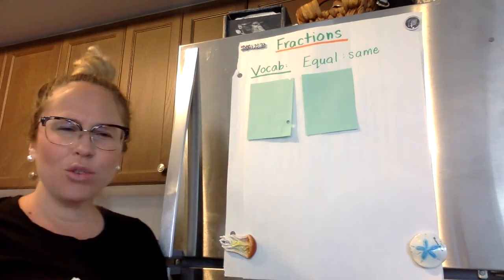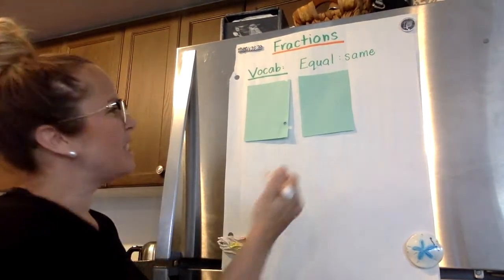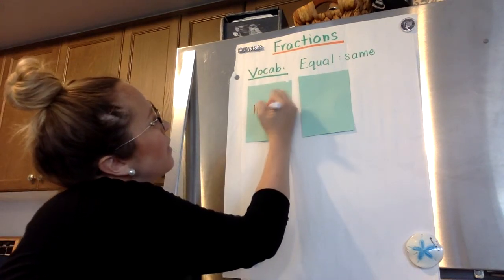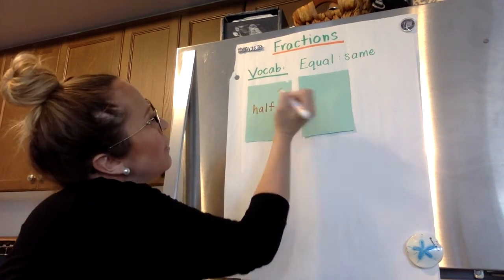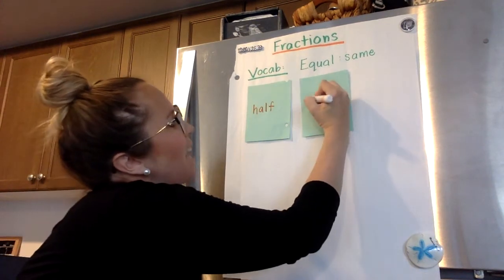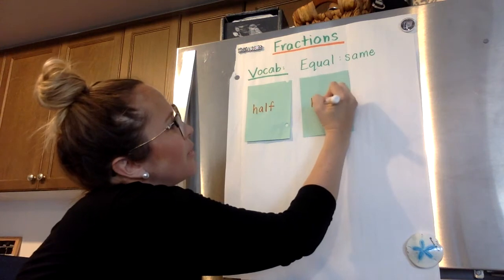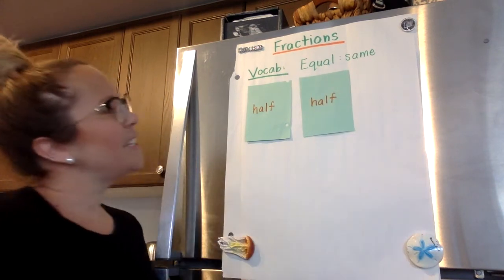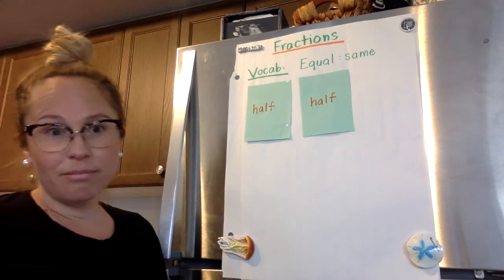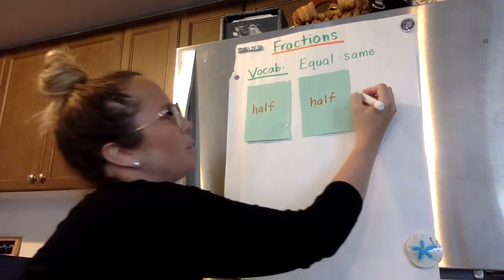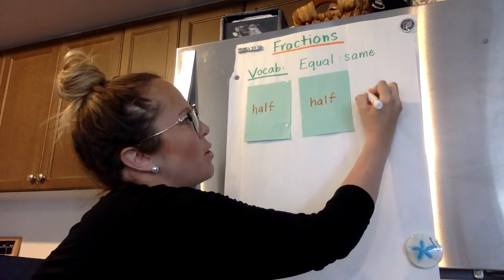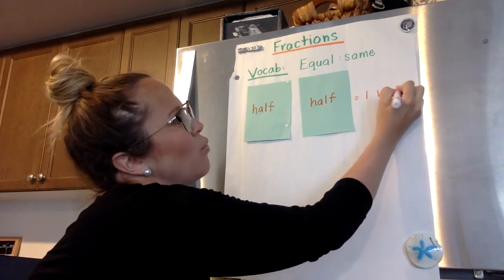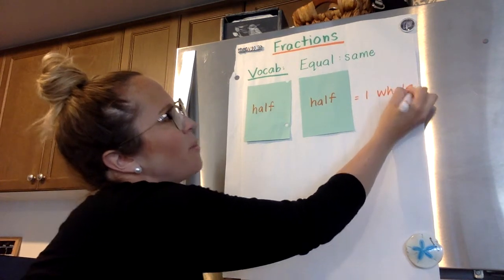So why do we call these halves? This is a half, this is a half, and together those make one whole — one whole piece of paper.